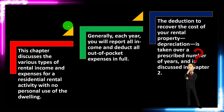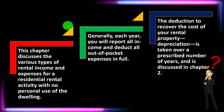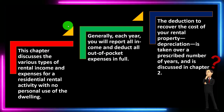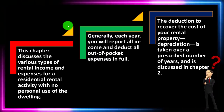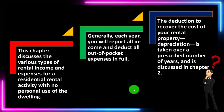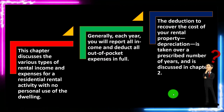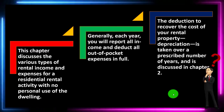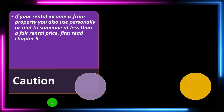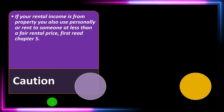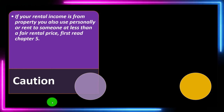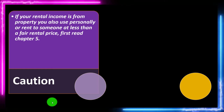Generally, each year you will report all income and deduct all out-of-pocket expenses in full. Depreciation — the deduction to recover the cost of your rental property — is a major component of expenses, allocating the cost of the rental property over its life according to the tax code, taken over the prescribed number of years, discussed in chapter two.